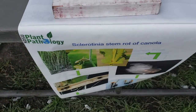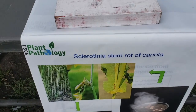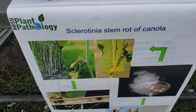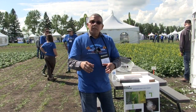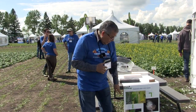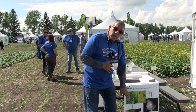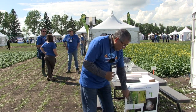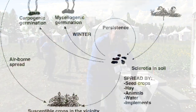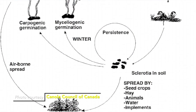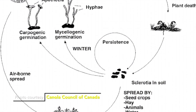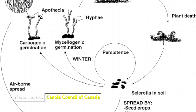From there, with moisture and good temperatures, the fungus germinates, colonizes the flower, gets into the stem, and that's how it kills the plant. Once the plant is infected, new Sclerotia are produced in the pith of the stems, and that way the cycle is completed.